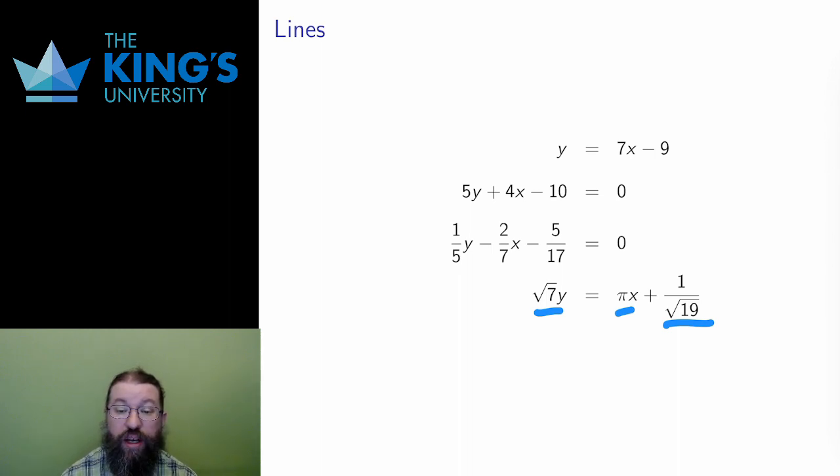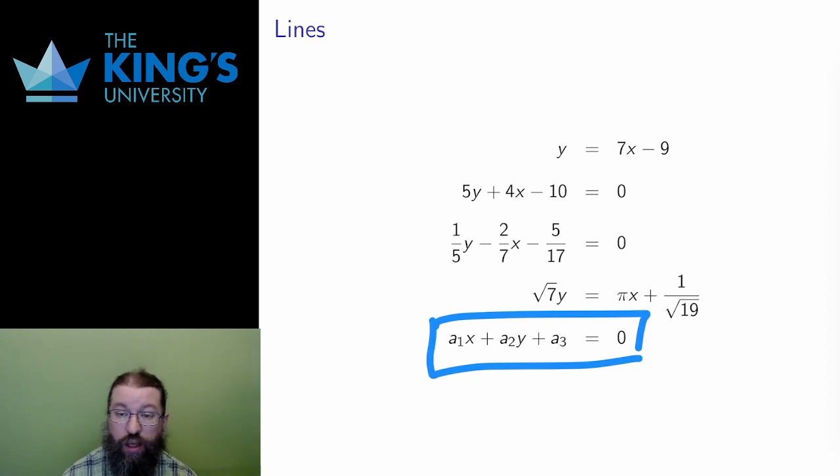Finally, if I wanted a general form of the equation of a line, I could write a1x plus a2y plus a3 equals 0, where a1, a2, and a3 are some constants. Any line can be rearranged to fit this form.